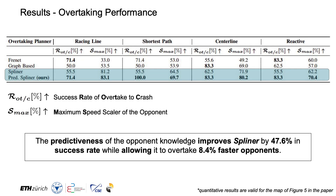Compared to the spatial-only spliner method, the predictiveness of the opponent knowledge allows the proposed method to increase the rate of successful overtakes by 47.6 percent, while allowing it to overtake 8.4 percent faster opponents.